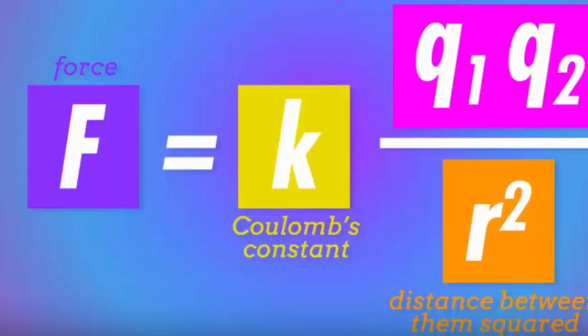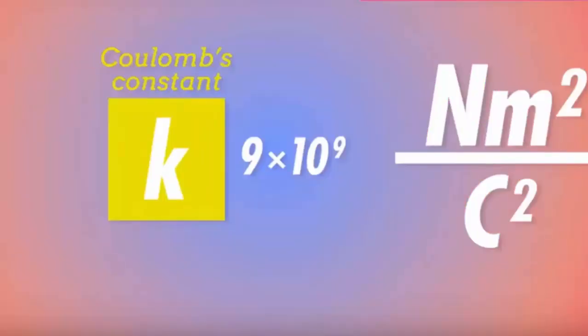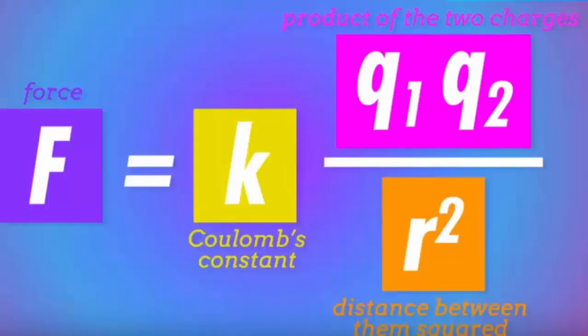And the constant, K, as opposed to G in the case of gravity, is a very big value. It's 9 times 10 to the power of 9 Nm squared over Coulomb squared. Other than that, we have the same relationship between force and distance, where the force is inversely proportional to the distance squared. Meaning, if you double the distance, the force will decrease by one-fourth. It's the inverse square law that we talked about in the case of gravity. And you can go back to lesson number 6, part 3, where we talked about the inverse square law in detail.